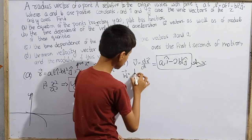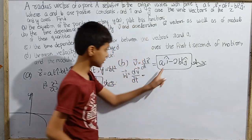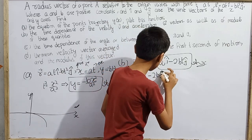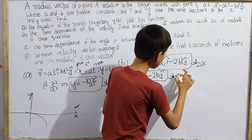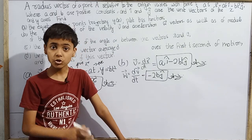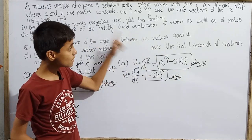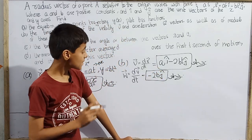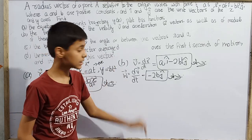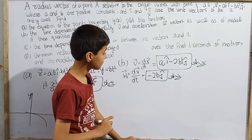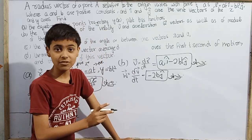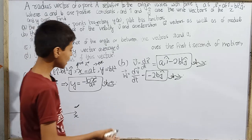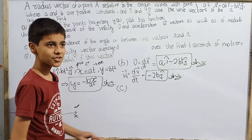The acceleration vector w equals d(v vector)/dt. Differentiating a·î minus 2b·t·ĵ gives: vector w equals minus 2b·ĵ. This is a constant downward acceleration. If this were truly projectile motion, minus 2b would equal minus g, giving b equals g/2, approximately 4.9 m/s². But we are not asked to determine that here.